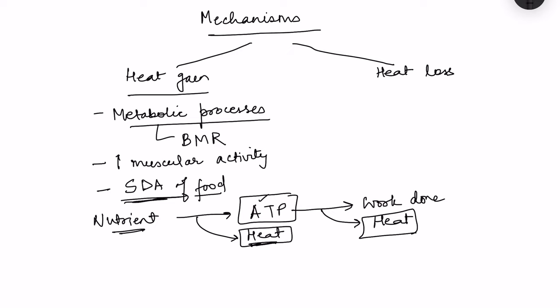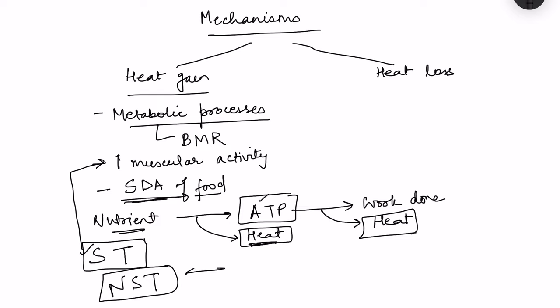When the body needs to gain more heat, it increases muscular activity, which is known as shivering thermogenesis — heat is generated through shivering. There is another mechanism called non-shivering thermogenesis, brought about by increasing the release of epinephrine. There is sympathetic activation and an increase in the release of epinephrine and norepinephrine, which causes non-shivering thermogenesis.